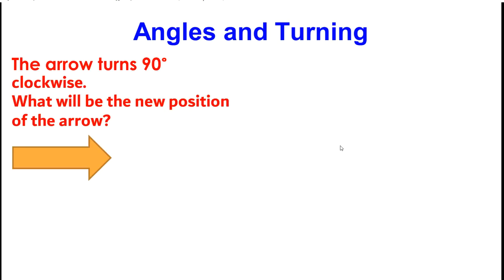Let's look at an example. Here we have an arrow. And we say that the arrow turns 90 degrees clockwise. What will be the new position of the arrow? So it's going to move 90 degrees clockwise. My arrow will point down.